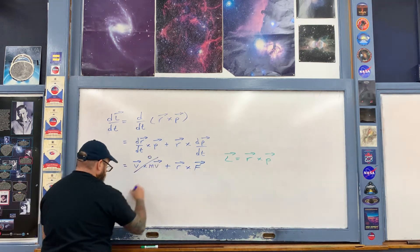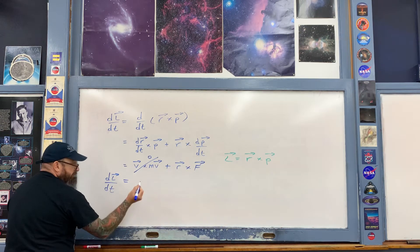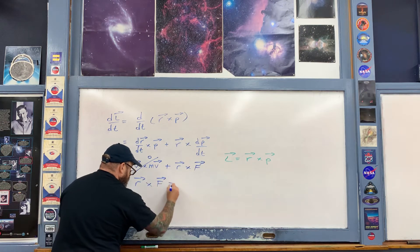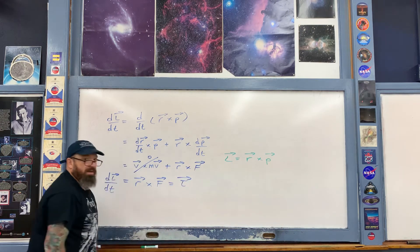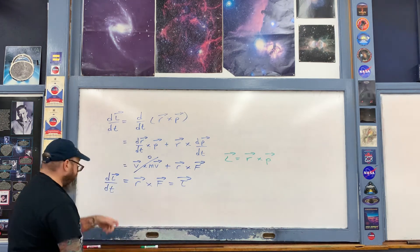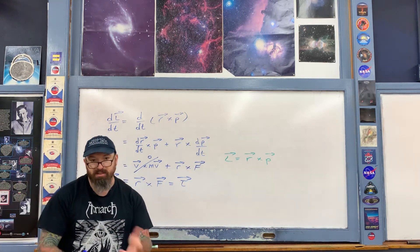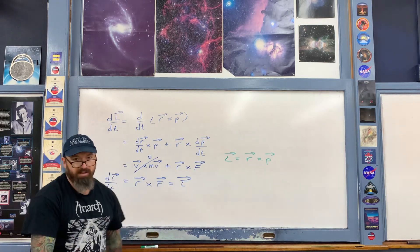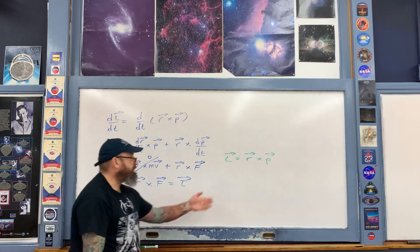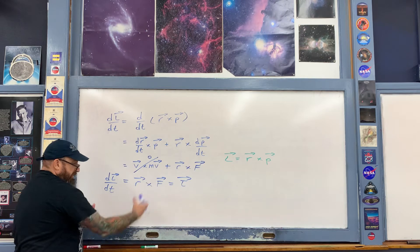We're left with the following: the derivative of angular momentum with respect to time is r cross F, which is torque tau. And if the sum of the external torques is equal to zero, then dL/dt equals zero, and therefore angular momentum is constant — which we've already seen.